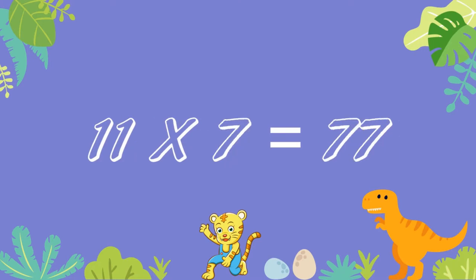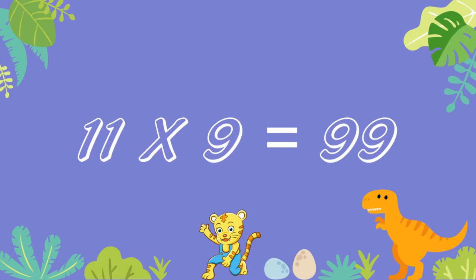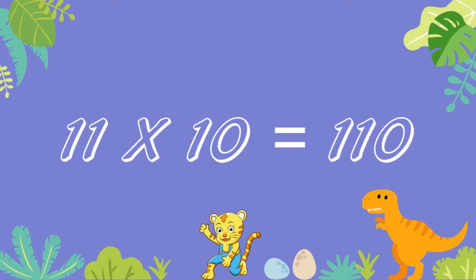11 sevens are 77. 11 eights are 88. 11 nines are 99. 11 tens are 110.